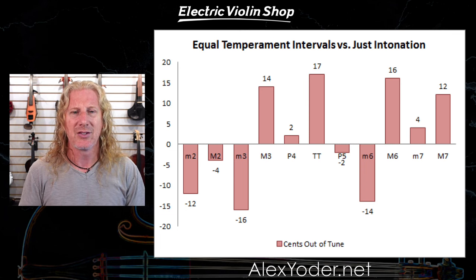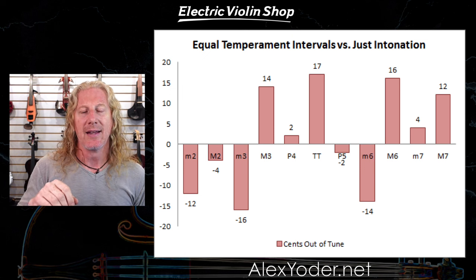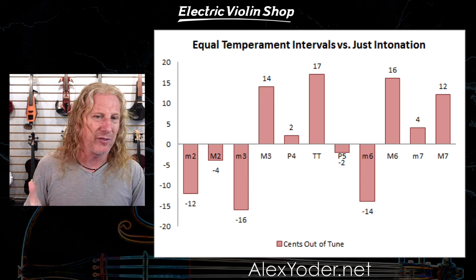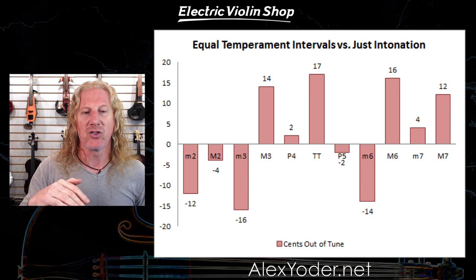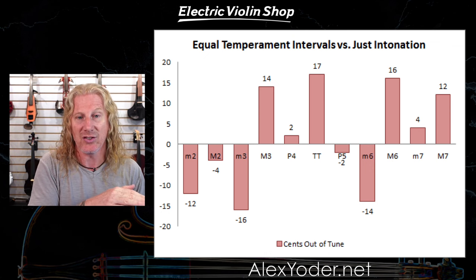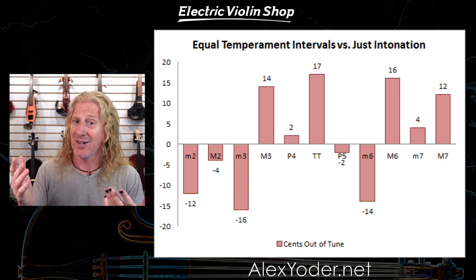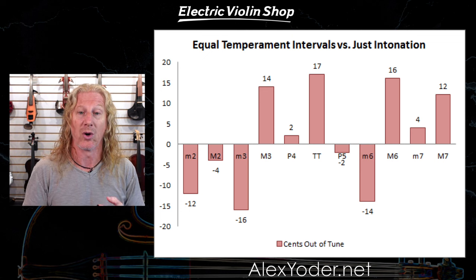Bach actually wrote a piece called the Well-Tempered Clavier because this tuning system for the instrument was relatively new. And it's actually equally out of tune in every key — a piano is equally out of tune in every key. Looking at graphs comparing equal temperament versus just intonation, the pink bars show how out of tune the piano is versus what your ears actually want to hear. The minor third, the major sixth, and the tritone are all really out of tune on a piano.